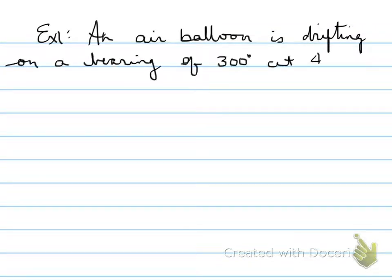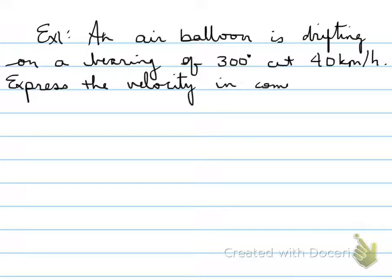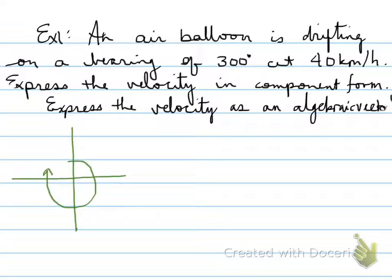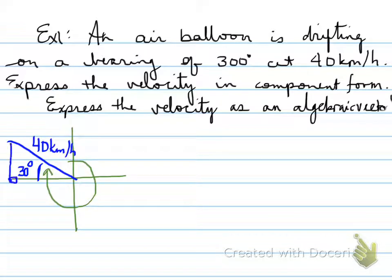An air balloon is drifting on a bearing of 300 degrees at 40 kilometers per hour. Express the velocity in component form, i.e., as an algebraic vector. A bearing of 300 degrees, measured clockwise from the north, lands us in the second quadrant. The angle that it makes with the closest x-axis is 30 degrees, and we know it's traveling at 40 kilometers per hour.